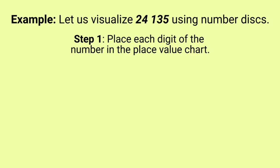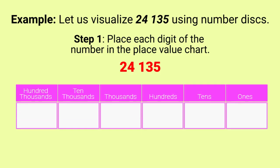Step 1: Place each digit of the number in the place value chart. We will place the digit 5 in the 1s place, 3 in the 10s place, 1 in the 100s place, 4 in the 1000s place, and 2 in the 10,000s place.